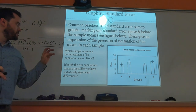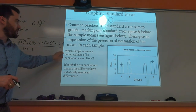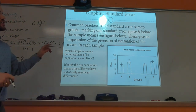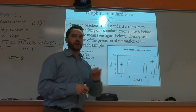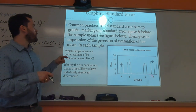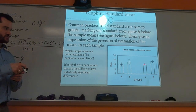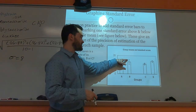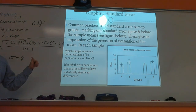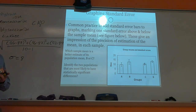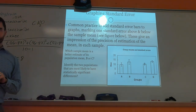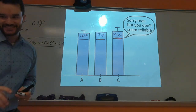Looking at the practice questions: which sample mean is a better estimate — population B or C? You'd say C, because C has smaller error bars, meaning they're more confident their actual average is at about 12. Population B's error bars suggest it could range from about 11 to 17. For identifying the two populations most likely to have statistically significant differences, it would be the populations with the biggest error bars — A and B — since they're less confident in their averages.